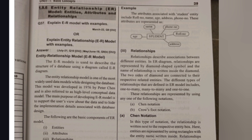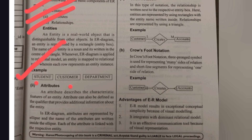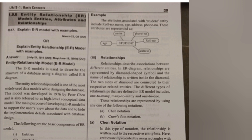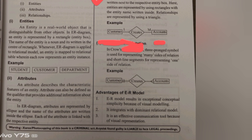The next important question is the ER Model — Entity Relationship Model. It uses a diagram to represent the structure of a database. The components are: Entities (e.g., student, customer, department), Attributes (e.g., student name, student ID, hall ticket number, phone number, age, course), and Relationships — linking one entity to another, for example a customer creating accounts. The advantage of ER Model is conceptual visualization.